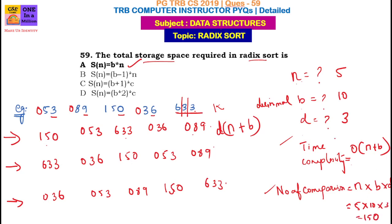The base can be decimal, octal, or hexadecimal. Octal is base 8 and hexadecimal is base 16. Radix sort is a very easy and optimal sorting algorithm. Compared to other sorting algorithms, this is an optimal algorithm. We also need to consider merge sort. Thank you for watching!